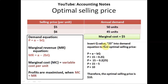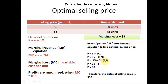The last step is to insert the Q value of 25 into the demand equation to find the optimal selling price. Our demand equation is P equals 15 minus 0.2Q. Inserting Q as 25: 0.2 times 25 is 5, and 15 minus 5 is 10. So our price is $10. Therefore, the best selling price is $10.